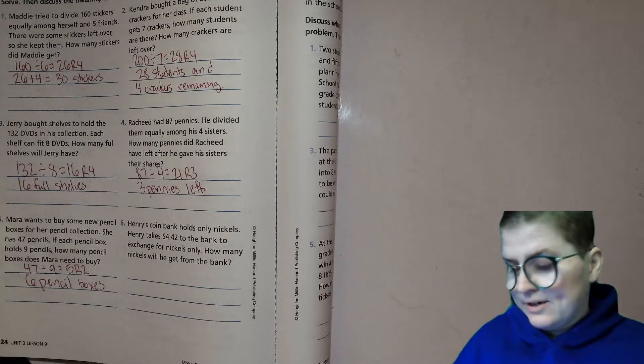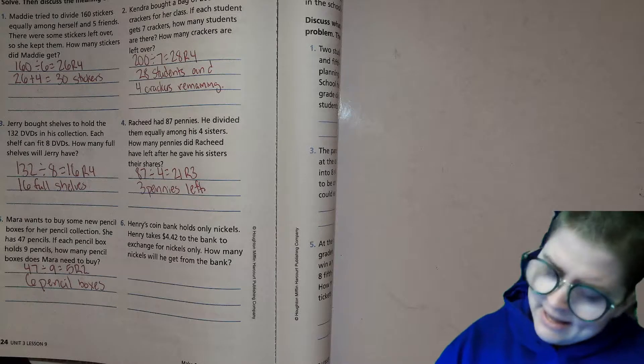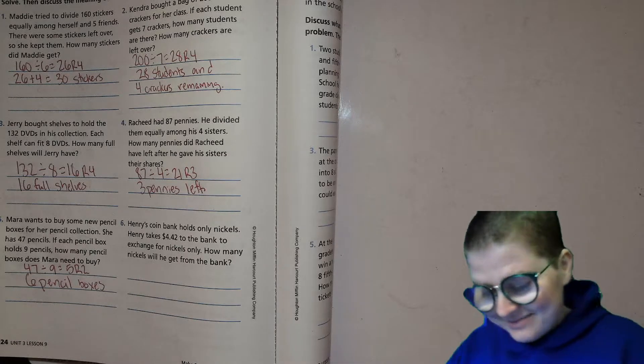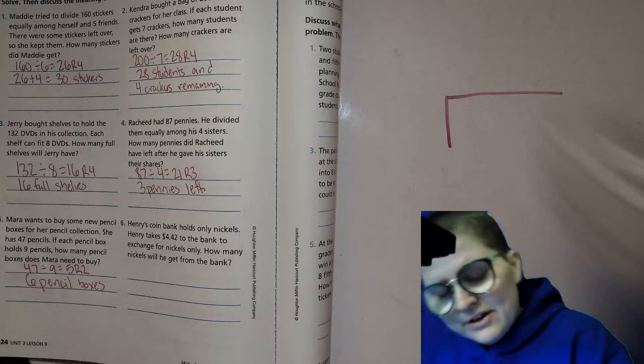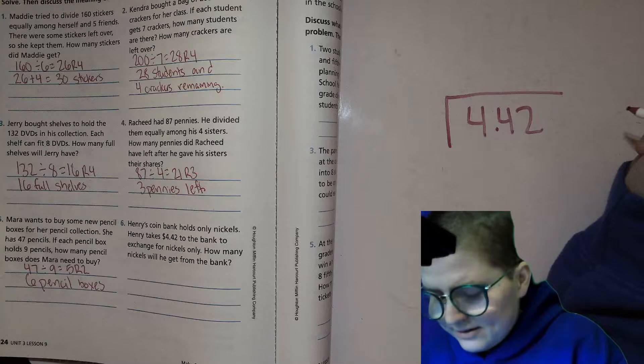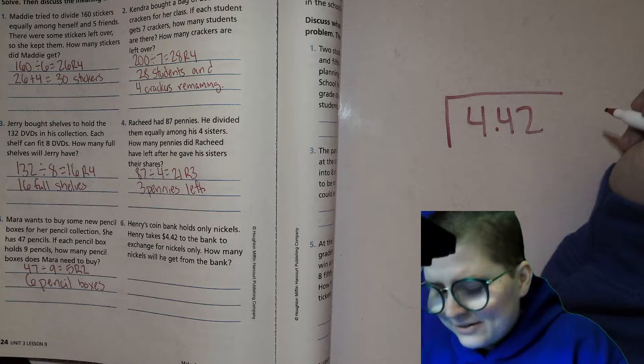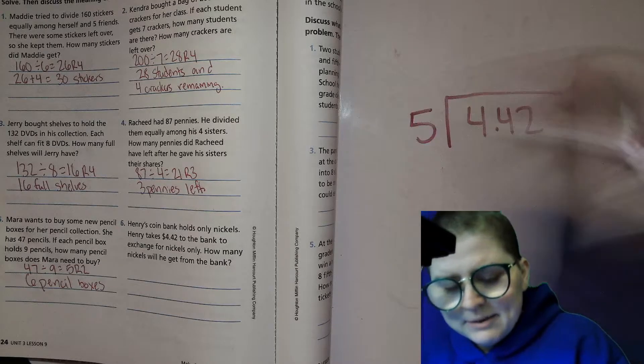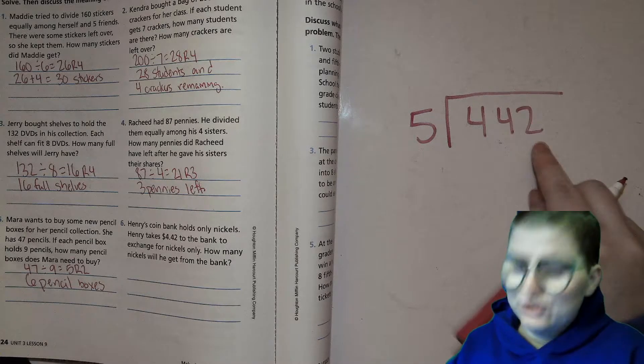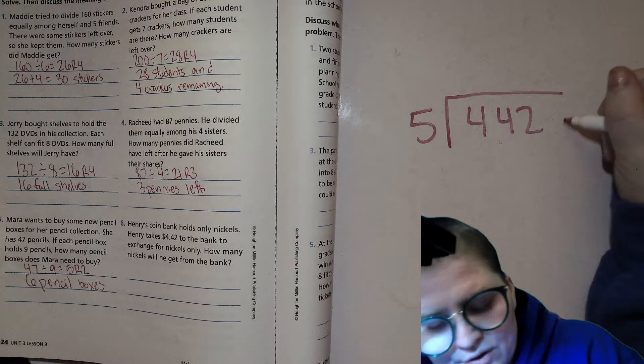Last one here, you want to give it a shot? It's a little tricky but I think you'll be okay. Henry's coin bank holds only nickels, that's funny. Henry takes four dollars and 42 cents to the bank to exchange for nickels only. How many nickels will he get from the bank? So I'm going to convert this from dollars to just pure cents. So instead of four dollars and 42 cents, I'm going to say it's 442 cents, because you're allowed to do that with math and money, because 400 cents is four dollars.